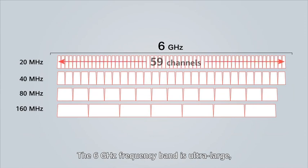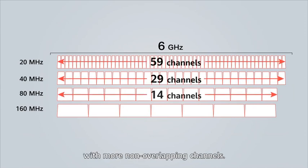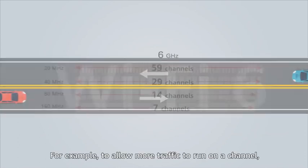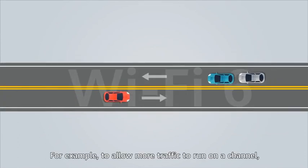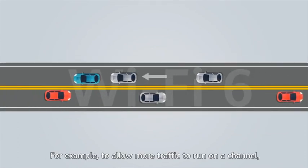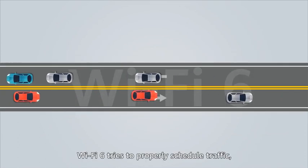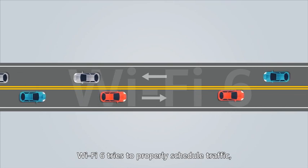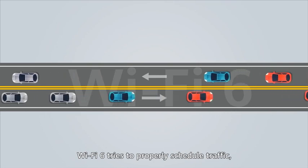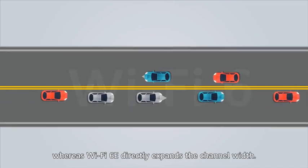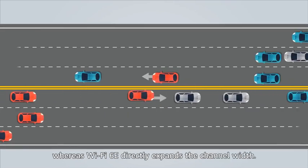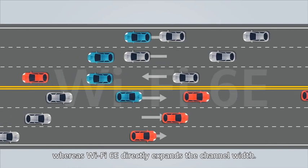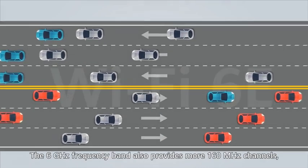The 6 GHz frequency band is ultra-large with more non-overlapping channels. For example, to allow more traffic to run on a channel, Wi-Fi 6 tries to properly schedule traffic, whereas Wi-Fi 6E directly expands the channel width.